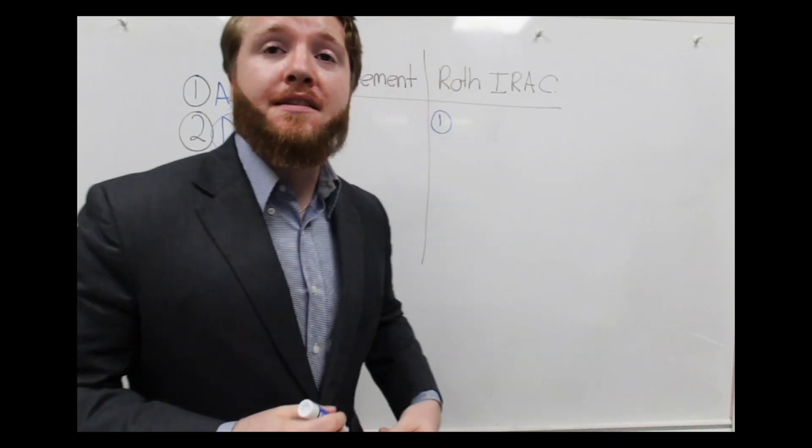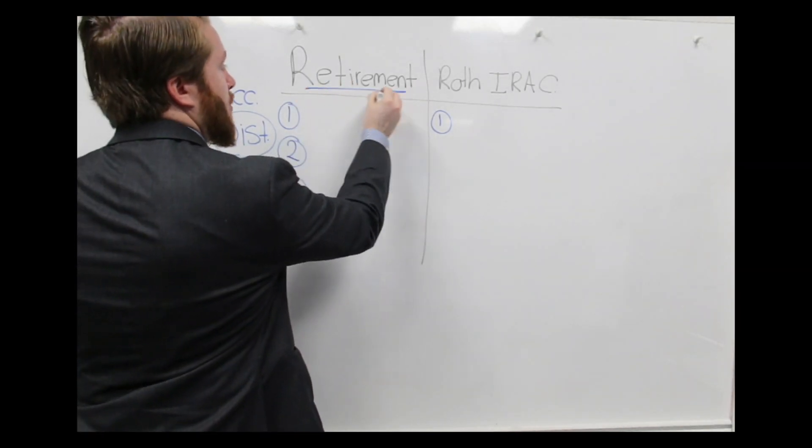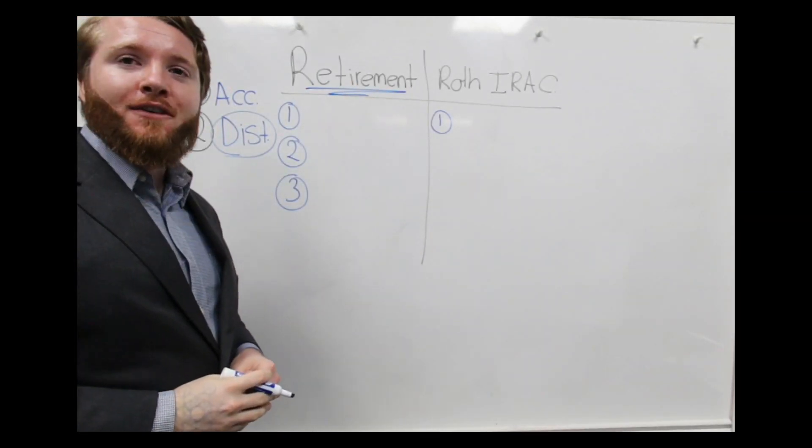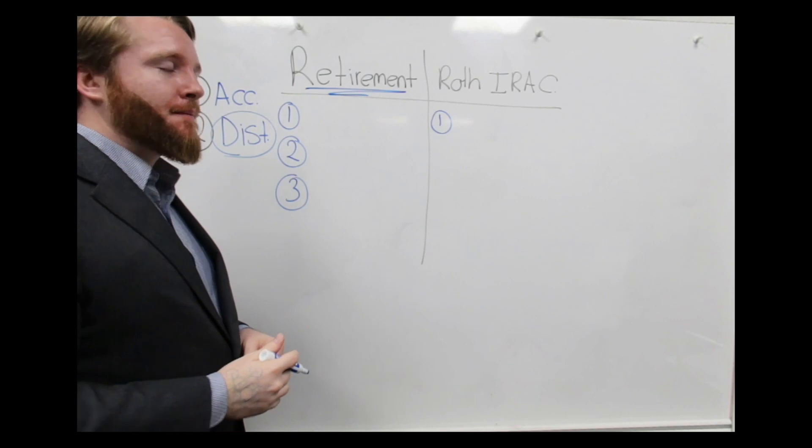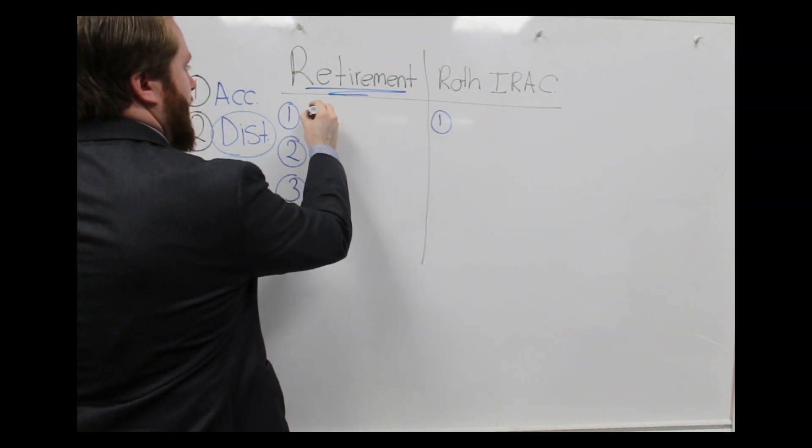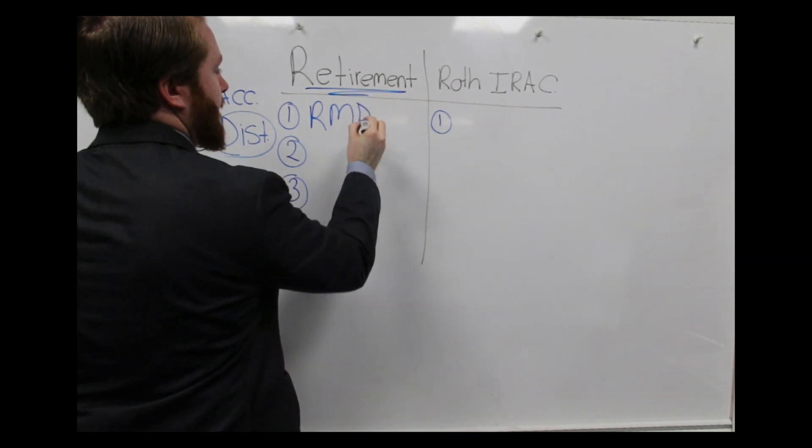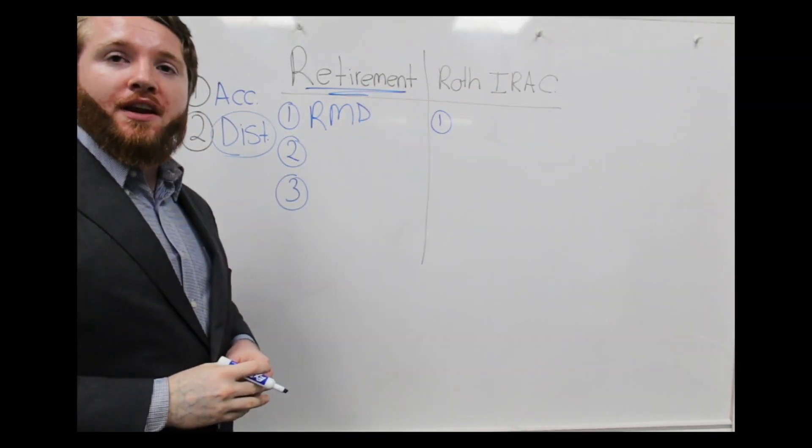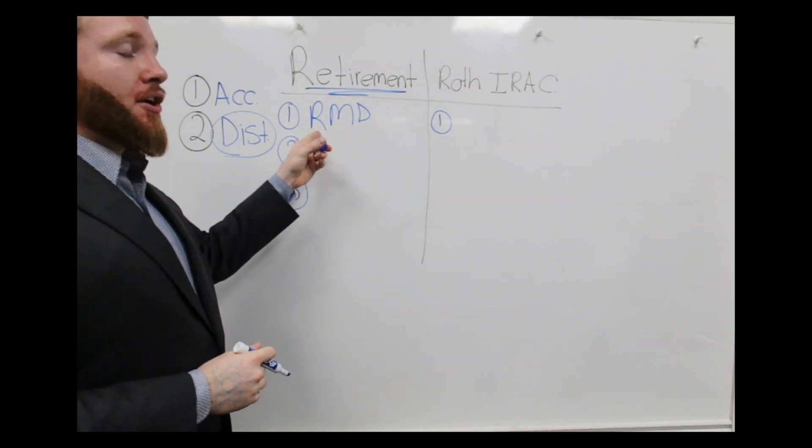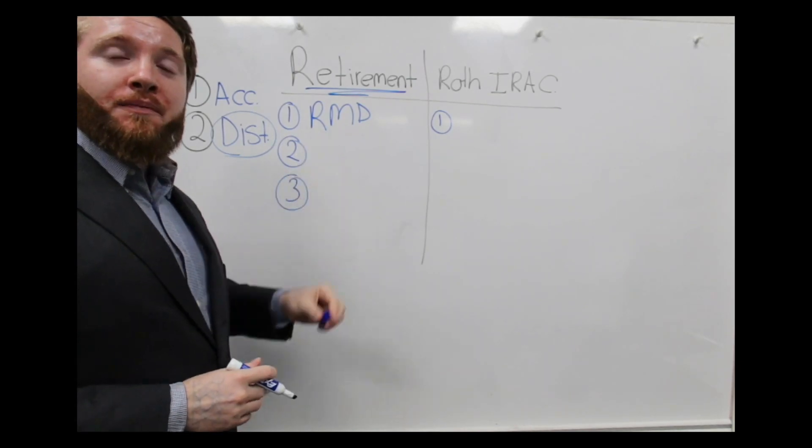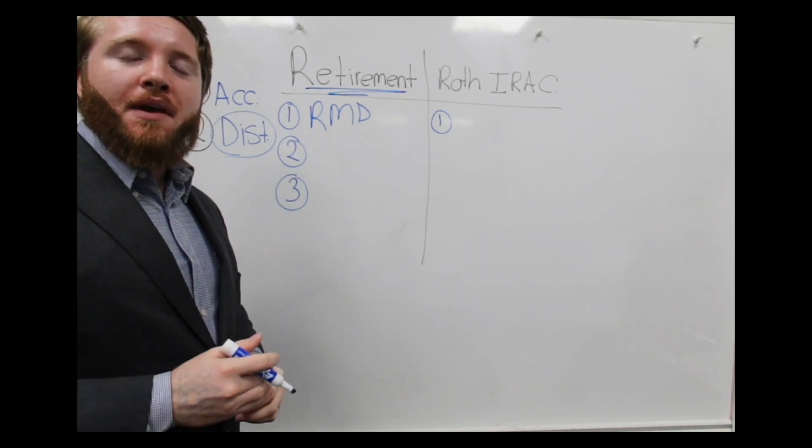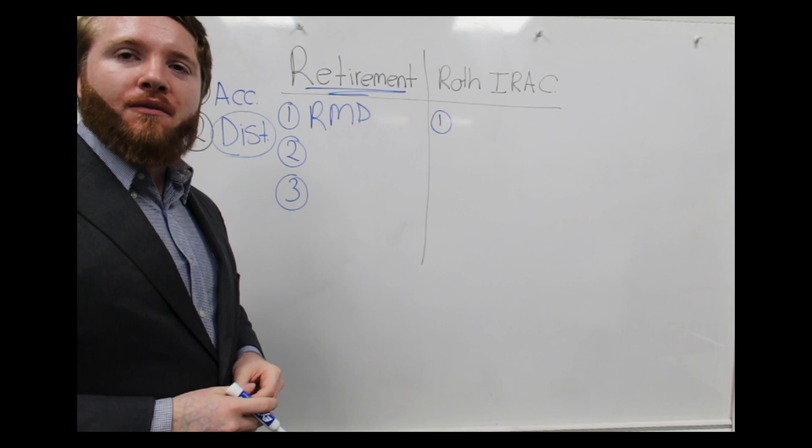The first thing you need to consider is, what is your retirement going to look like over the next 15-20 years? The first thing is, at 73, or 75 depending on your age, you'll have to start taking RMDs—required minimum distributions. Those are mandated withdrawals from your retirement account when you reach a certain age.